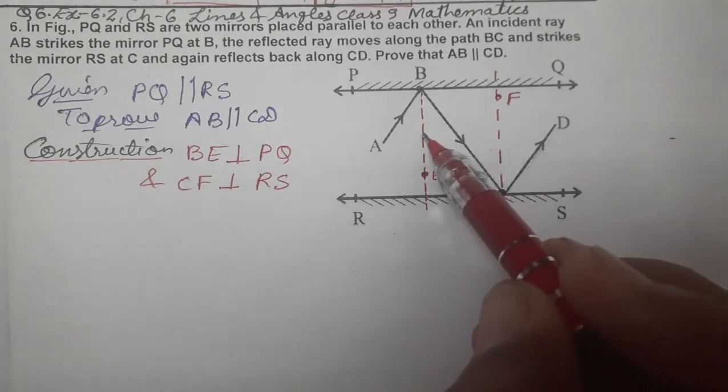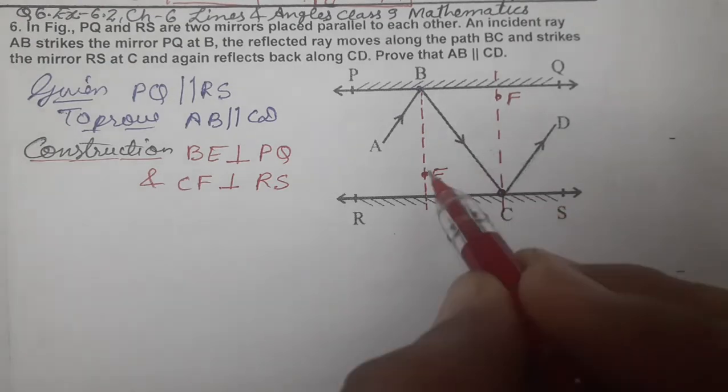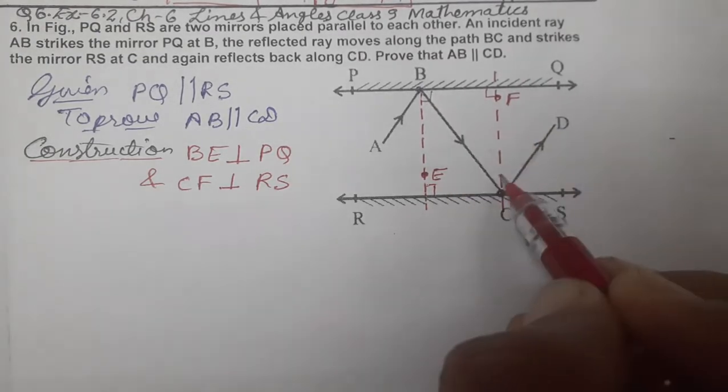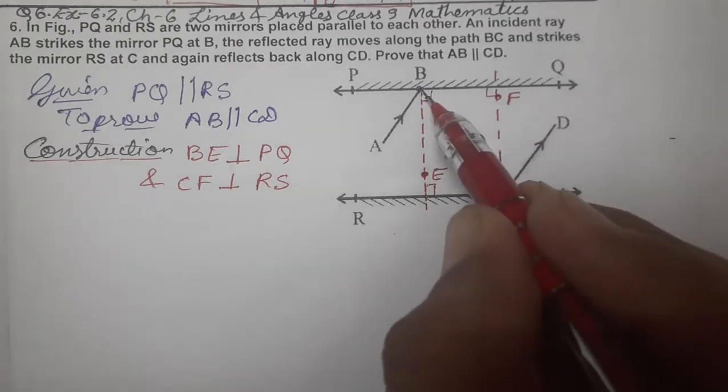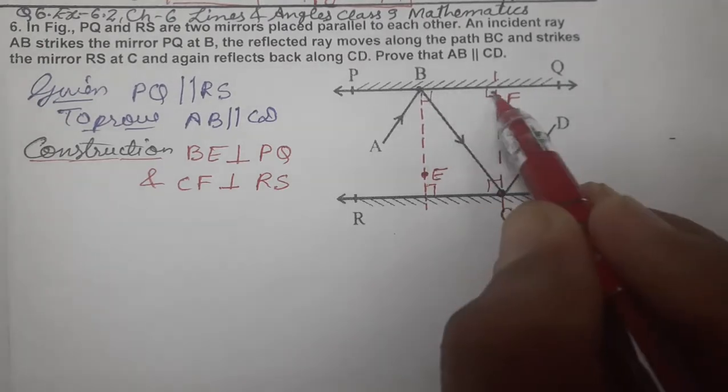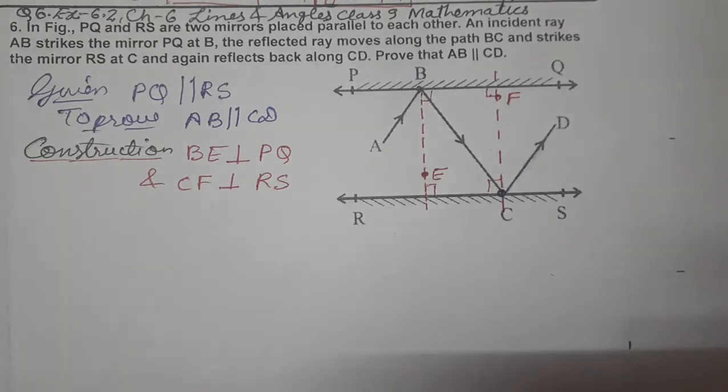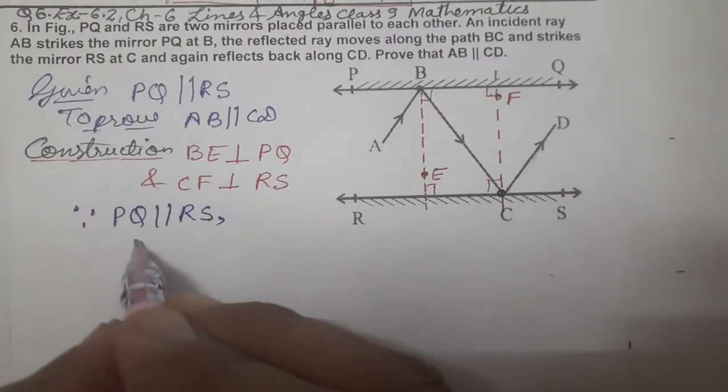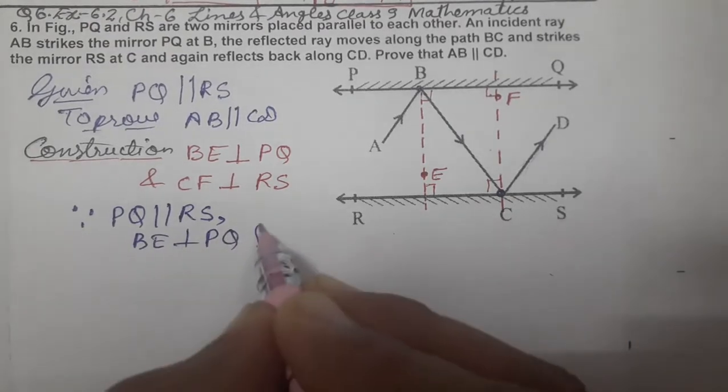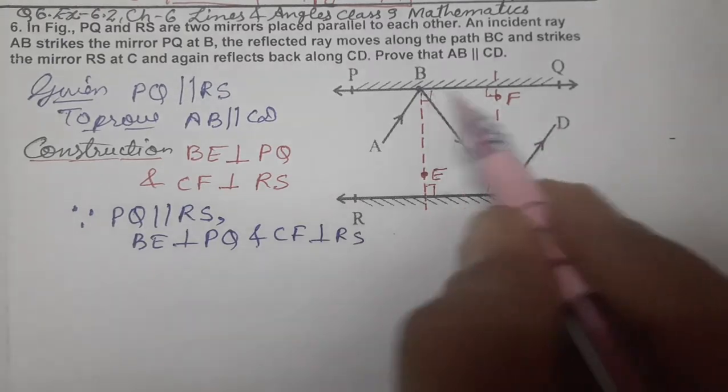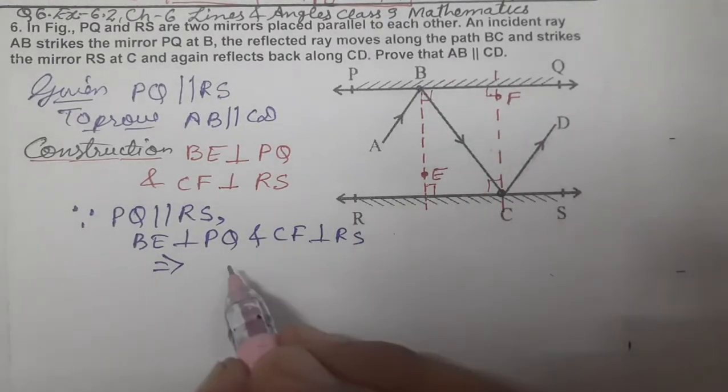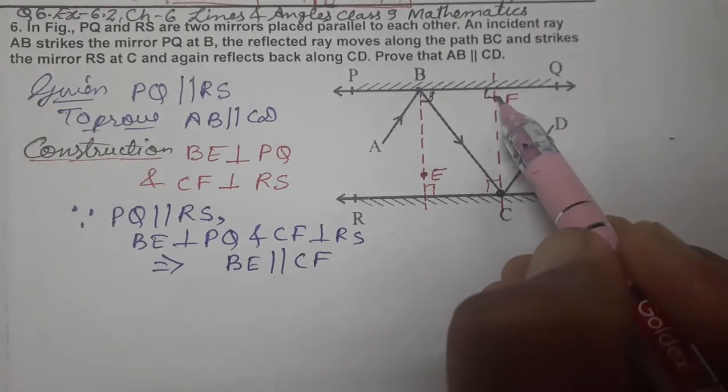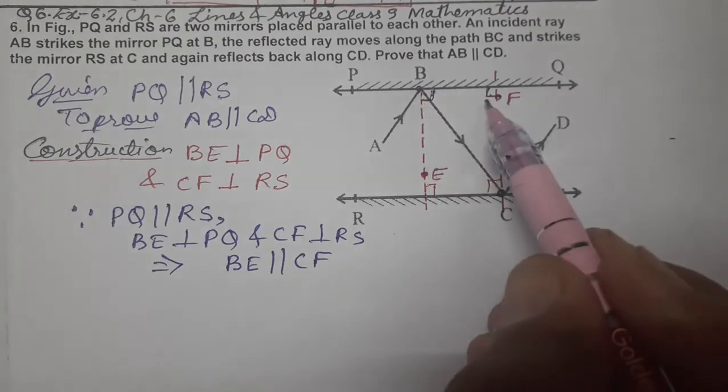Now we know very well: if two lines are perpendicular, they are parallel. This is 90 degrees, this is 90 degrees. So these two lines are parallel. Since PQ parallel to RS, and BE perpendicular to PQ, and CF perpendicular to RS, it implies BE parallel to CF.